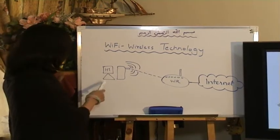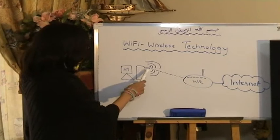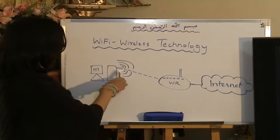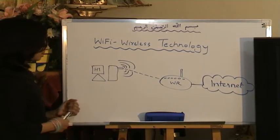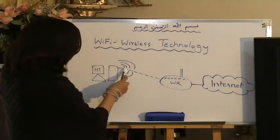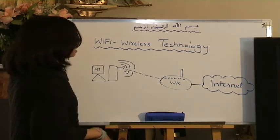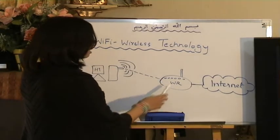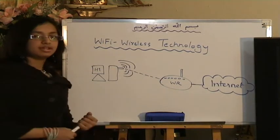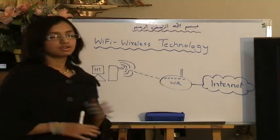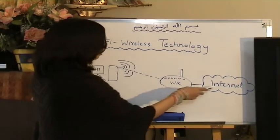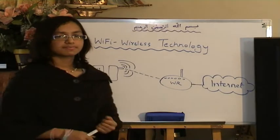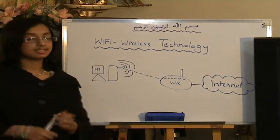In this picture, a host labeled as Host 1 is connected to a rectangular device — ignore that for now, as I'll explain it later. A dotted line from this computer represents wireless connectivity, going towards a device labeled as WR, which stands for wireless router. It's also known as an access point, gateway, or gateway router. From there, it's connected to the internet via cable. It's called a wireless router because it has wireless features built in.